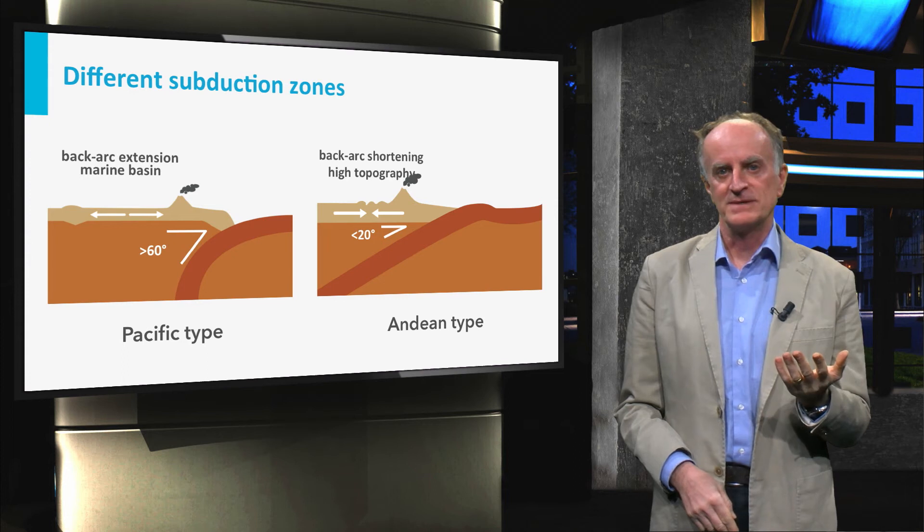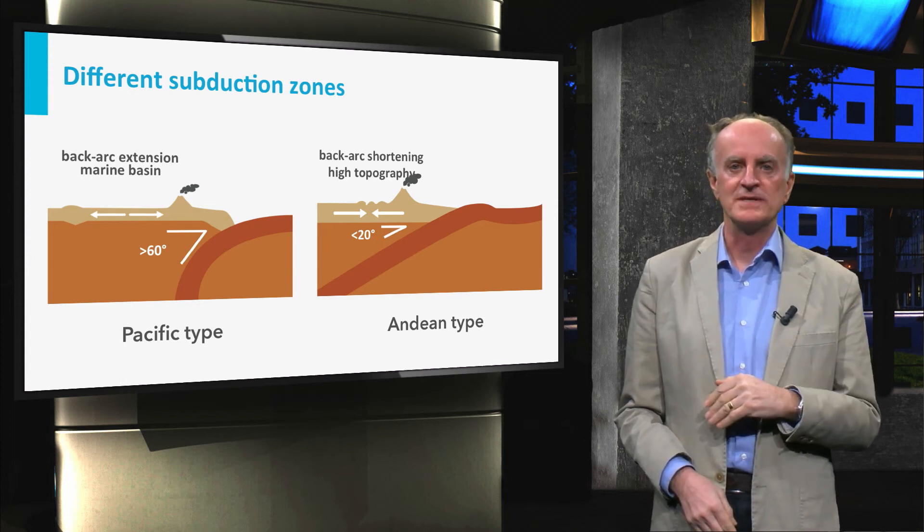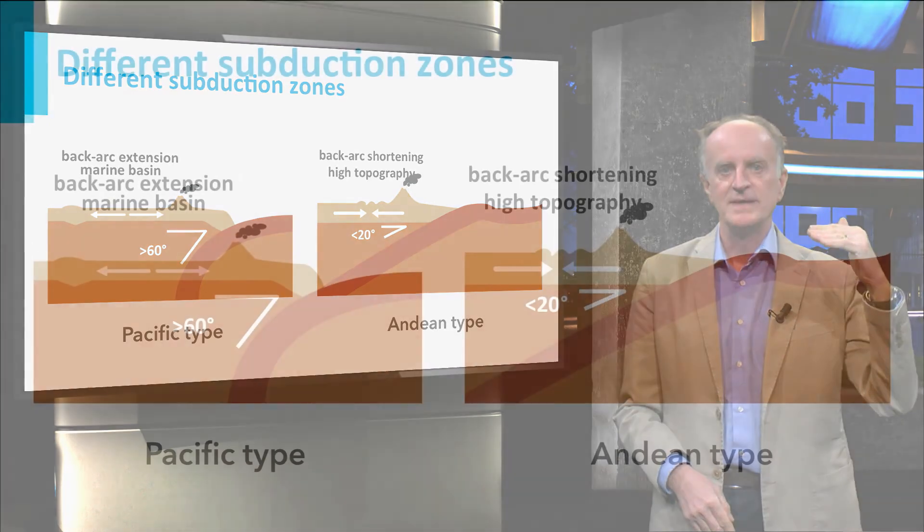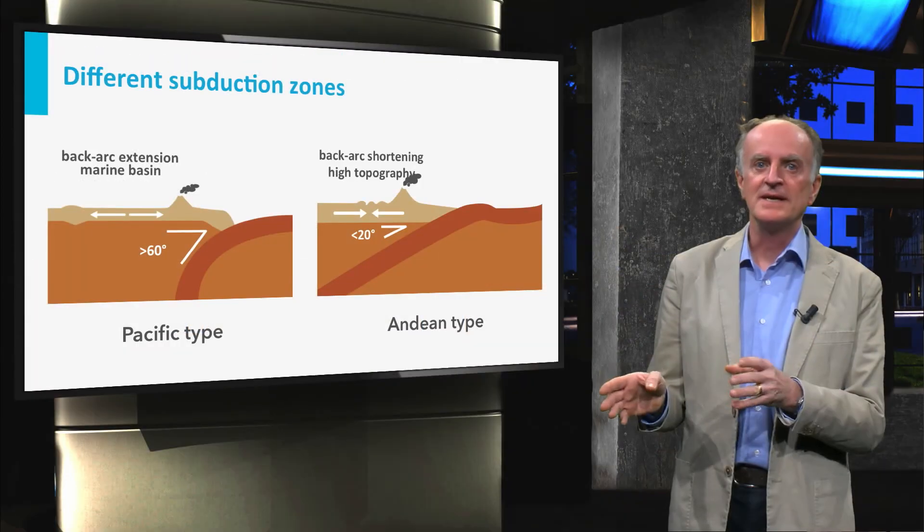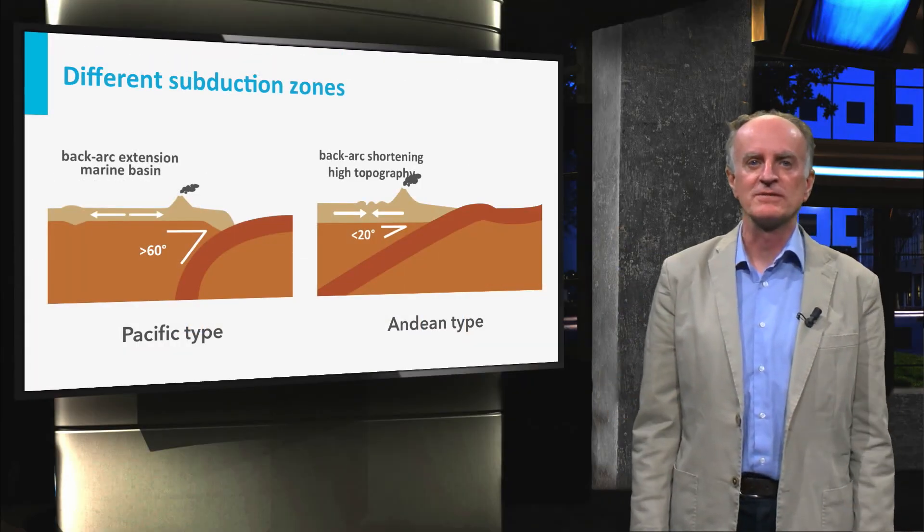The second difference between the two types of subduction zones is observed in the upper plate. The upper plate in Indian-type is continuous and above sea level. The upper plate of Pacific-type subduction, on the contrary, typically displays a marine basin. This basin is associated with extensional faults.